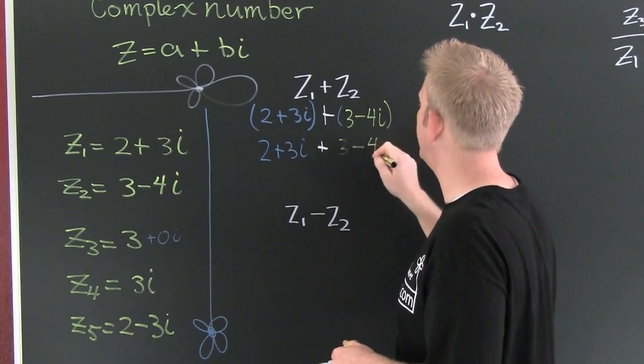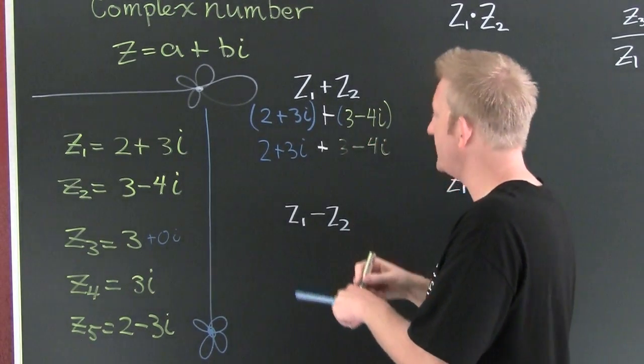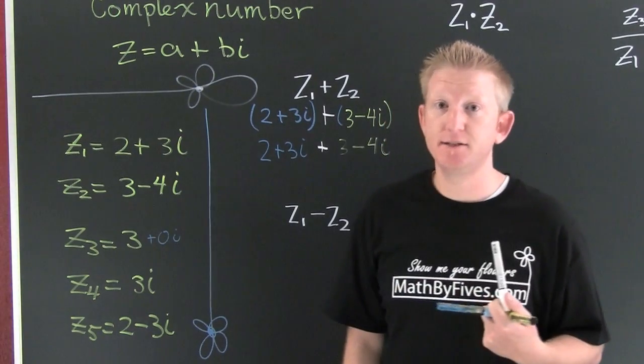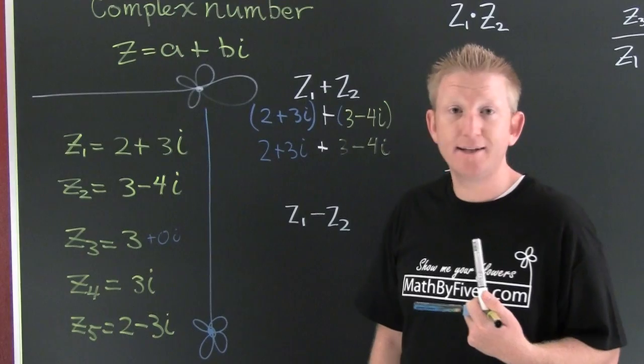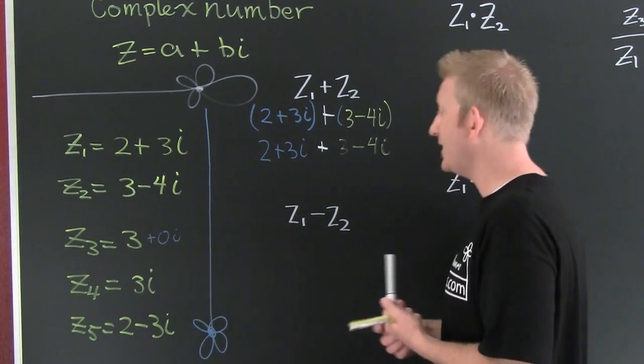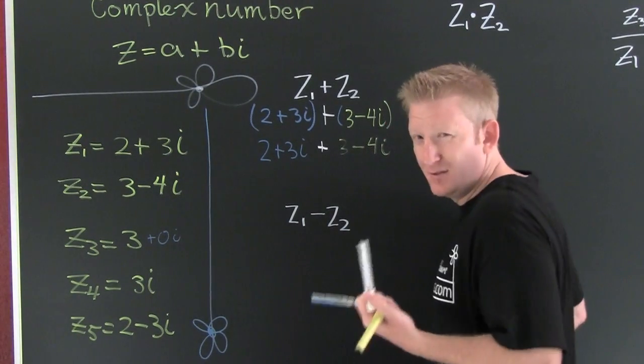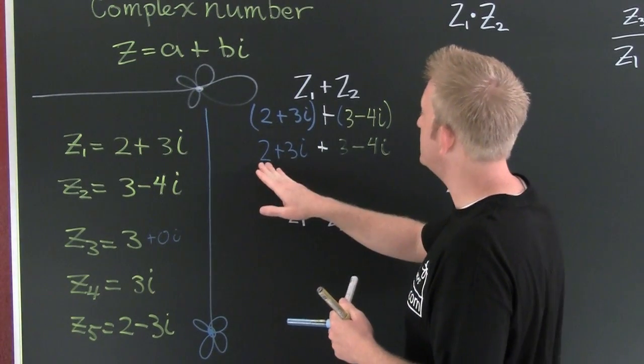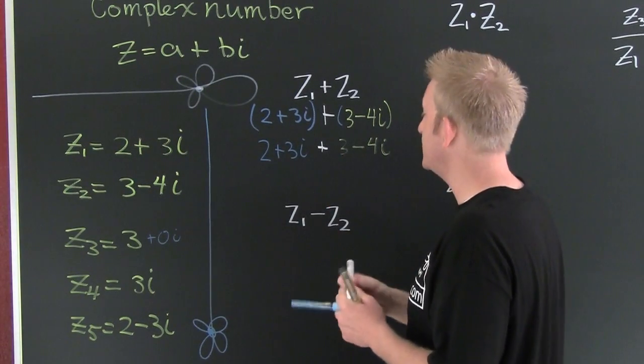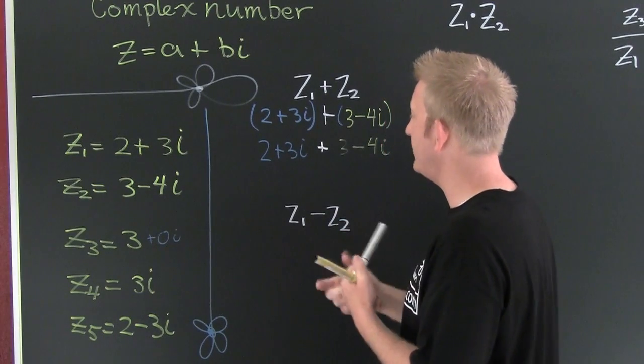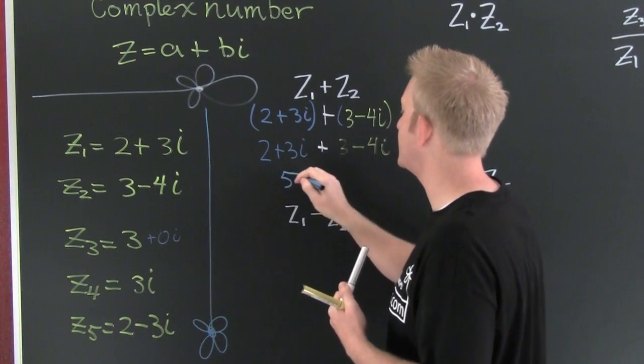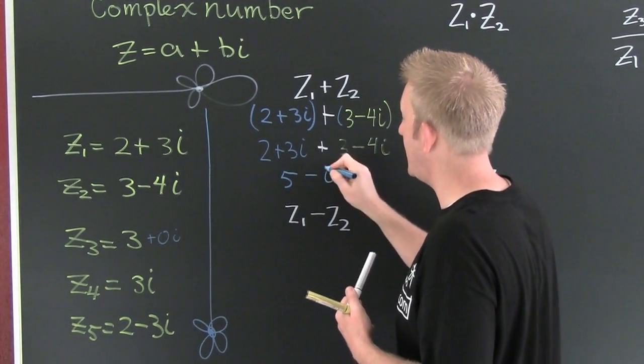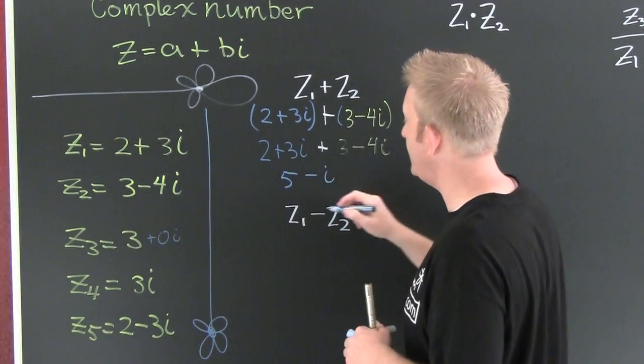When we're adding complex numbers, we add the real parts and we add the imaginary parts. It's kind of like gathering like terms, but it's more like gathering like places. I have 2 reals and 3 reals together, it's going to give me 5 reals. 3i minus 4i is going to give me minus i.